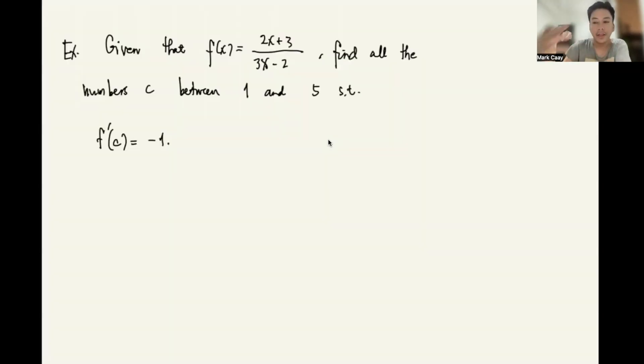We will apply this with examples. So as it says here that given f(x) equals (2x+3)/(3x-2), find all the numbers c between 1 and 5 such that f'(c) equals negative 1. So how do we do this? We need to have knowledge on how to solve for the derivative of the function. And I bet that you're watching this video, you already know how to get the derivative of a function. So one requirement here is you have knowledge on that.